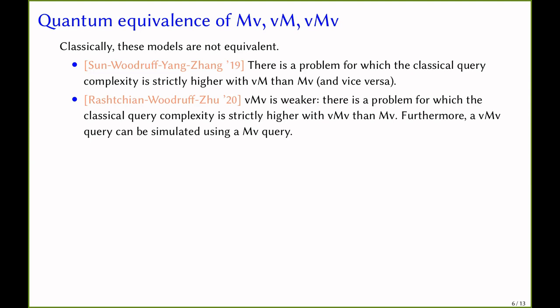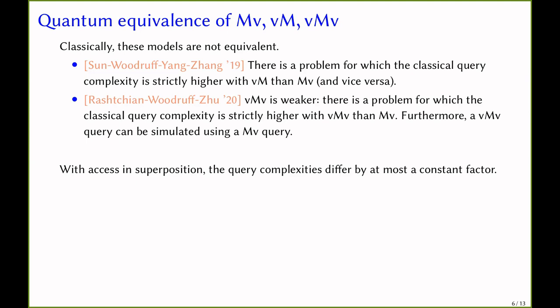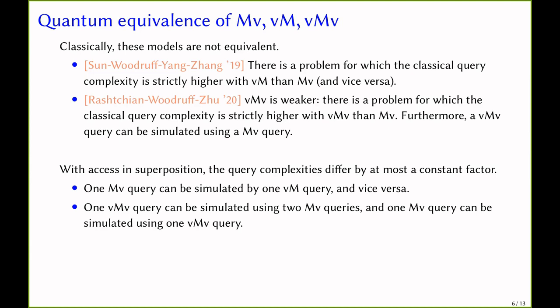In the classical setting, VMV is strictly weaker, and a VMV query can be simulated using one MV query. On the other hand, with access in superposition, the query complexity differs by at most a constant factor. In particular, we show that you can simulate one VM query using one MV query and vice versa, and also simulate a VMV query using a constant number of MV queries and vice versa.